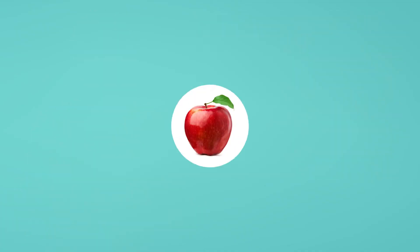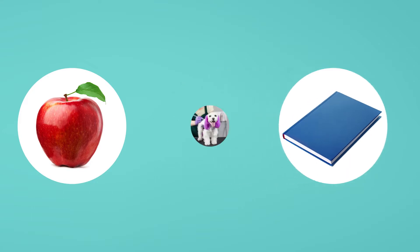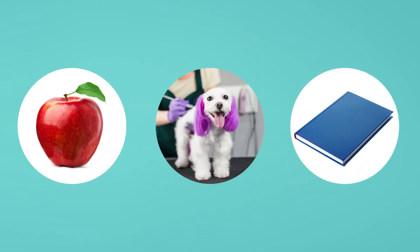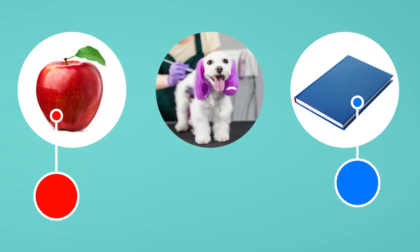So, when you see a red apple, a blue book, or a purple-eared puppy, what you're seeing is reflected red light, reflected blue light, and reflected purple light. But there's not a blue sun shining blue light or a purple sun shining purple light. So, where do all these colors come from?